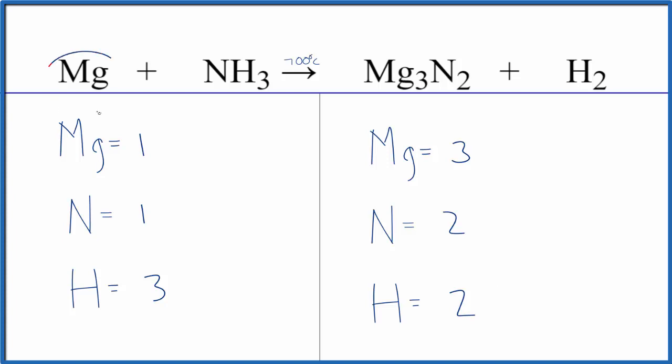It's probably easiest to leave the magnesium and then the hydrogen gas here to last, because they're by themselves. When we change the coefficient here, it won't change anything else.